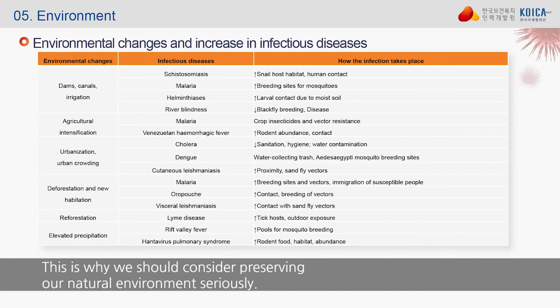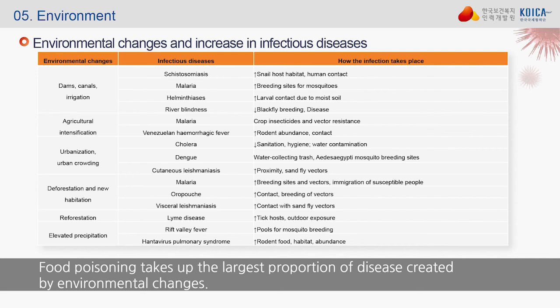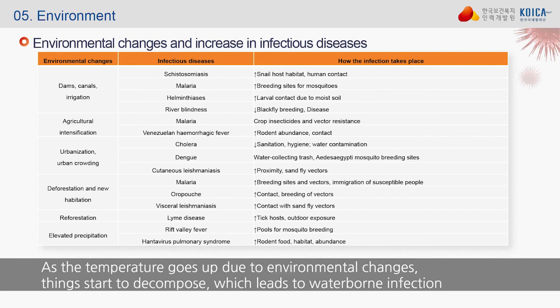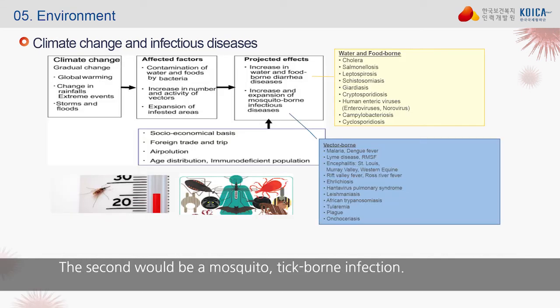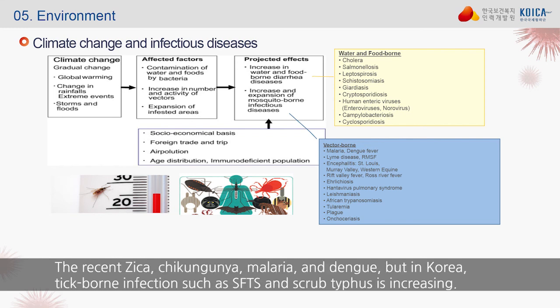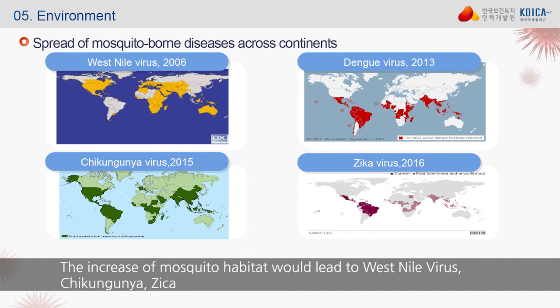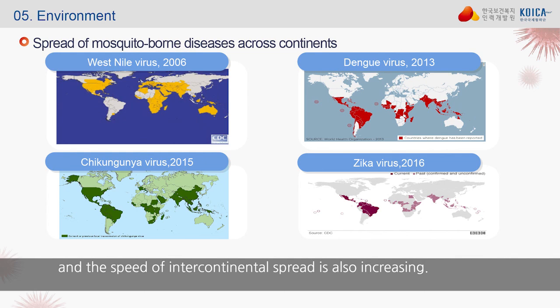Most of these changes are created by humans, which is why we should consider preserving our natural environment seriously. Food poisoning takes up the largest proportion of disease created by environmental changes — as temperatures rise, things decompose, leading to waterborne infection and foodborne infectious diseases. The second major cause is mosquito- and tick-borne infection. Recent examples include Zika, chikungunya, malaria, and dengue. In Korea, tick-borne infections such as SFTS and scrub typhus are increasing. The spread of West Nile virus, chikungunya, and Zika across continents is also increasing.